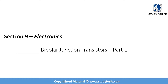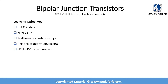Welcome to part one of our multi-part lecture series on bipolar junction transistors, which is a subsection of electronics. Learning objectives include understanding BJT construction, a comparison between NPN and PNP BJTs, understanding the mathematical relationships that relate the base current, collector current, and emitter current, regions of operation, biasing of BJTs, and DC circuit analysis particularly for NPN transistors.